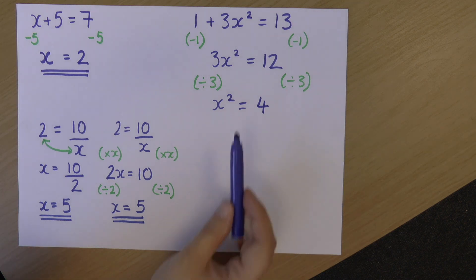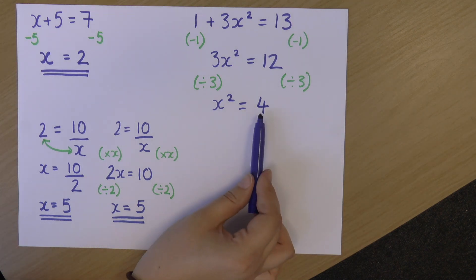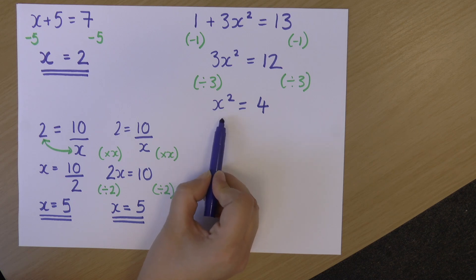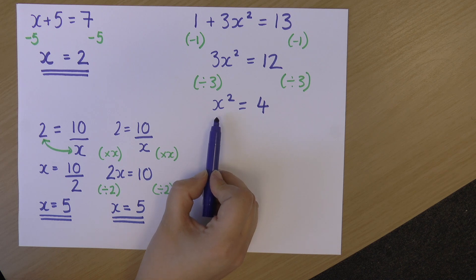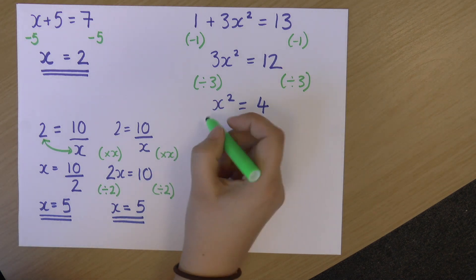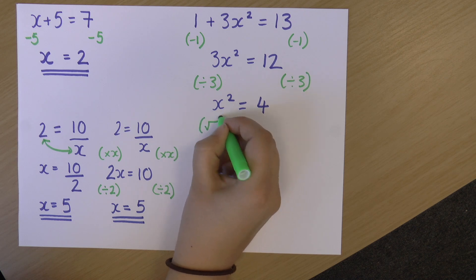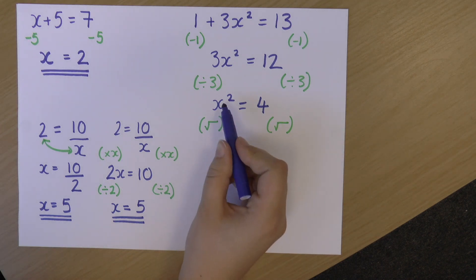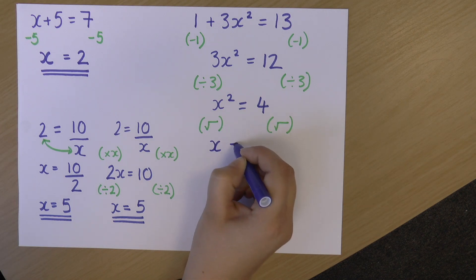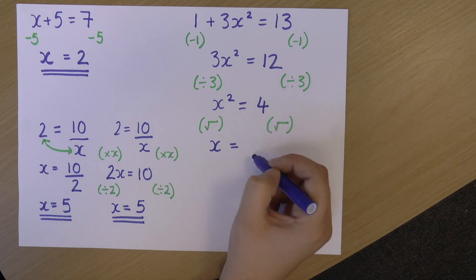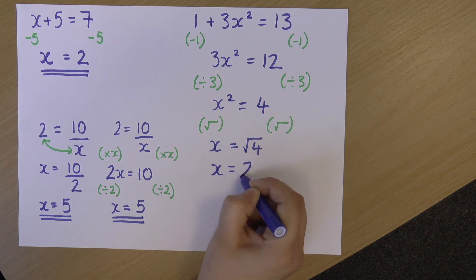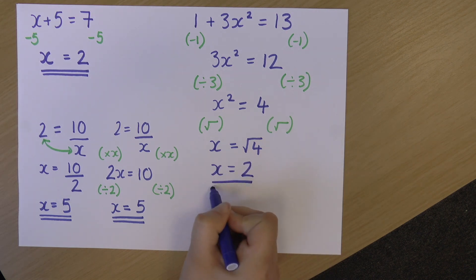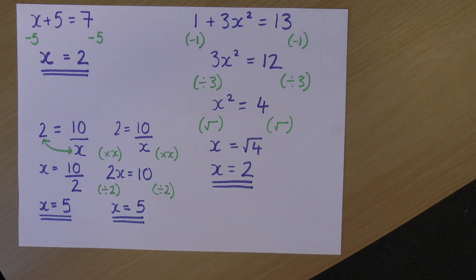Okay, so now I've got my x on the left and 4 on the right, but this is still not quite x on its own. This is still an x squared. So I'm going to do the opposite of a squared, which is a square root. So I'm going to square root both sides. So if I square root a square number, that gives me just the number itself. And then the square root of 4 is 2. So my value for x in this equation is 2.